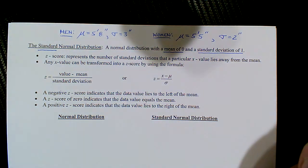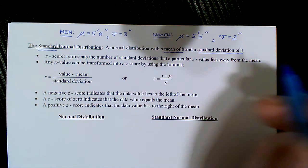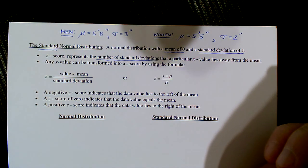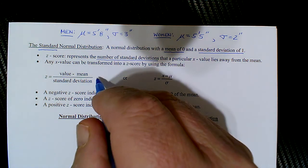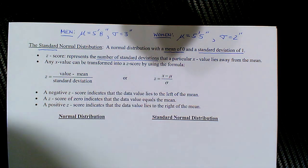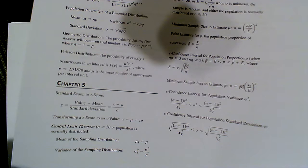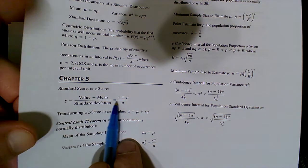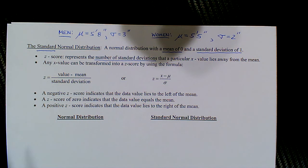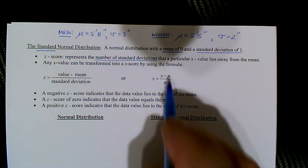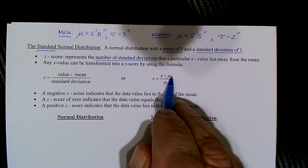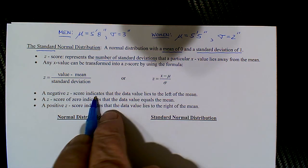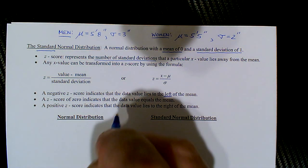We standardize by converting to a standard normal distribution where the mean equals zero and the standard deviation equals 1 for each dataset. We do this using the familiar z-score, which represents the number of standard deviations a particular data value x lies away from the mean. The formula is z = (x − μ) / σ, meaning the data value minus the population mean divided by the population standard deviation. A negative z-score means we're to the left of the mean; a positive z-score means we're to the right.